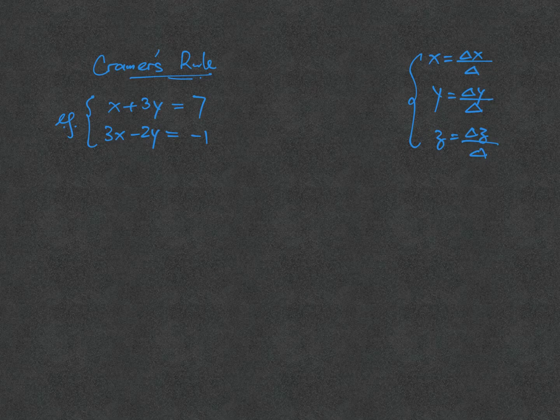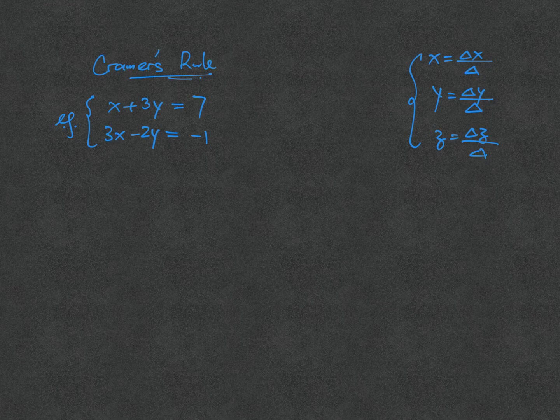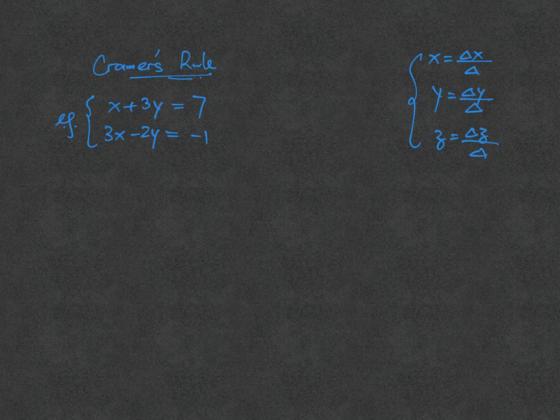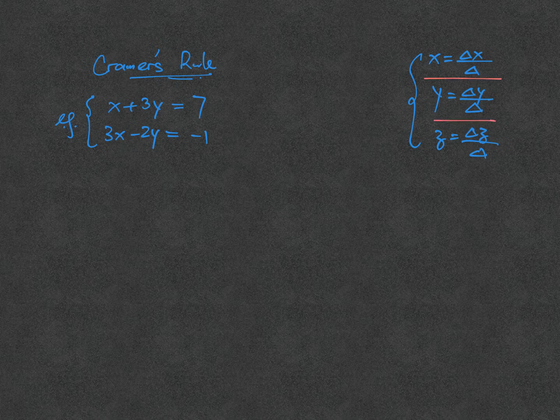In this video, we will see how Cramer's rule helps us solve a system of linear equations. The formulas are in the corner: x is delta x over delta, y is delta y over delta, and z is delta z over delta.